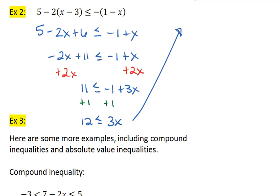Finally, we divide by 3. Since this is a positive 3, we do not need to worry about flipping the signs. We are given 4 is less than or equal to x, so x is greater than or equal to 4.